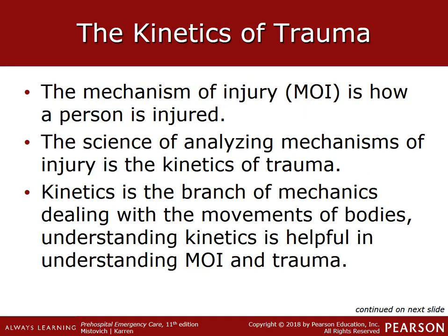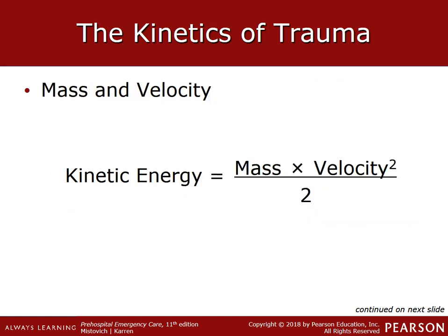How severely a person is injured depends on the force with which he collides with something — velocity — and something collides with him. This force depends partly on the energy contained in the moving body or bodies. The energy contained in a moving object is called kinetic energy, and velocity of that object plays a huge part in the kinetic energy and how it's delivered.